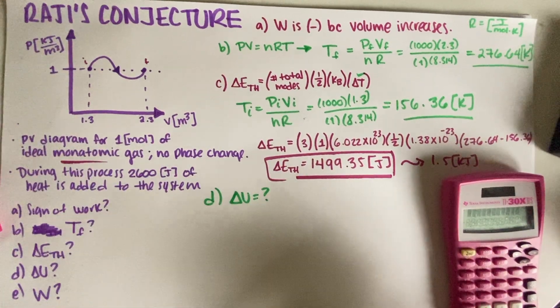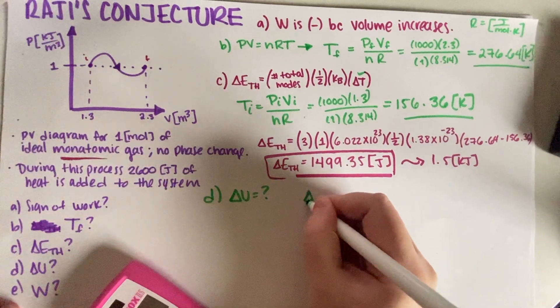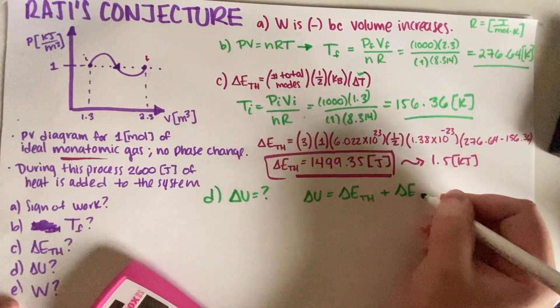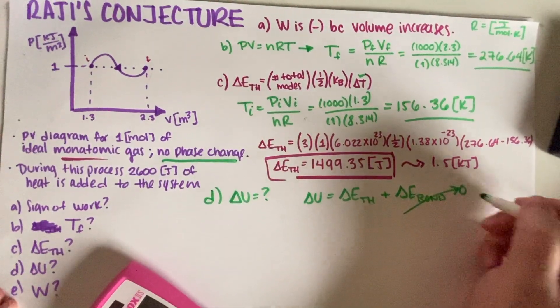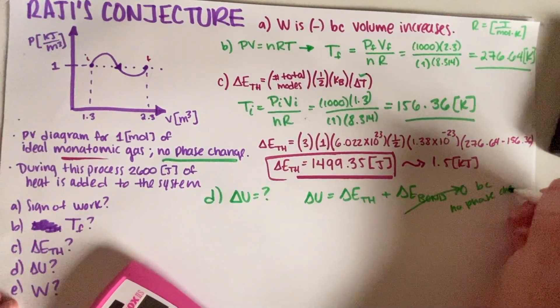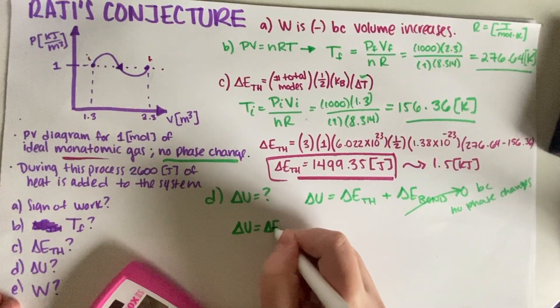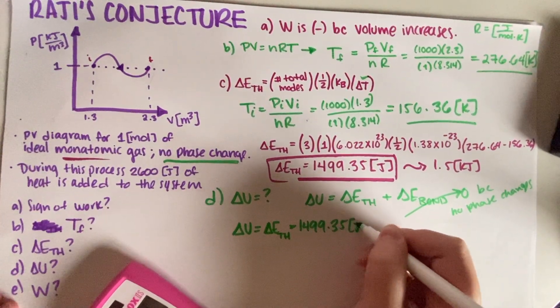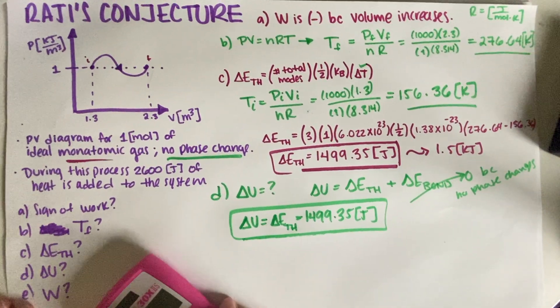Changing internal energy. So this is kind of straightforward, because again, we can use our definitions. So our first definition is that delta U is equal to change in E thermal, plus change in E-bond. But again, no phase changes. So this is equal to zero, because no phase changes. Therefore, delta U is equal to delta E_th. So this is 1499.35 joules final answer.